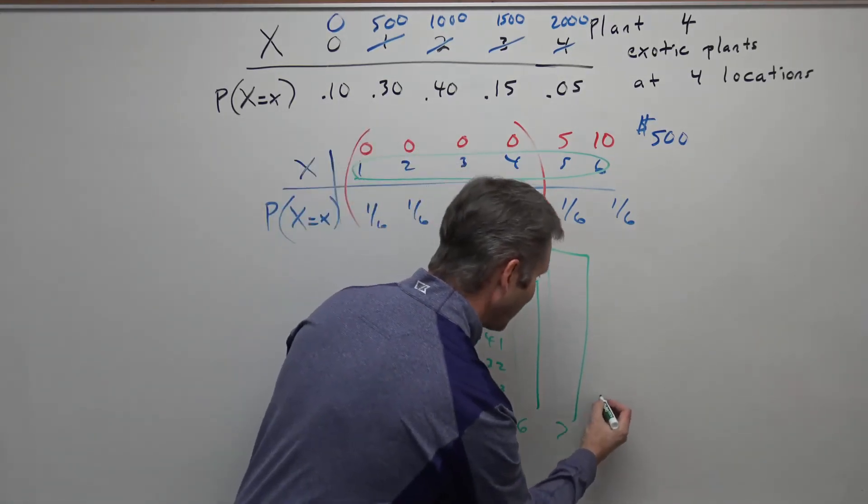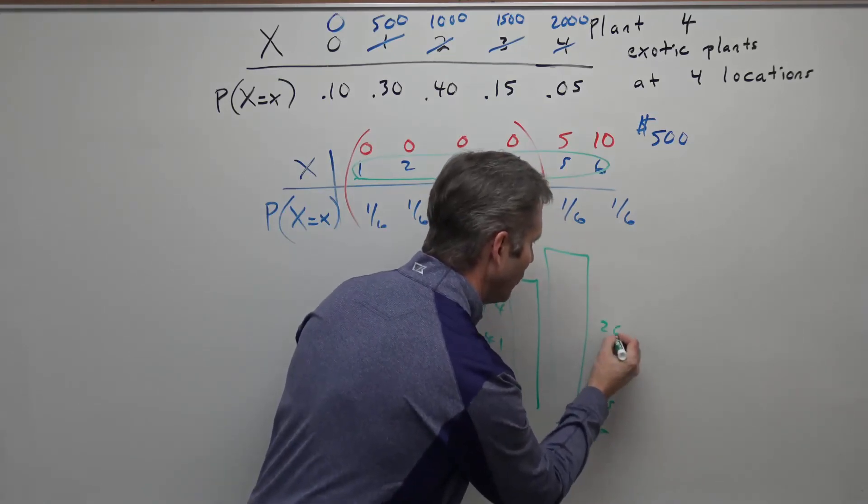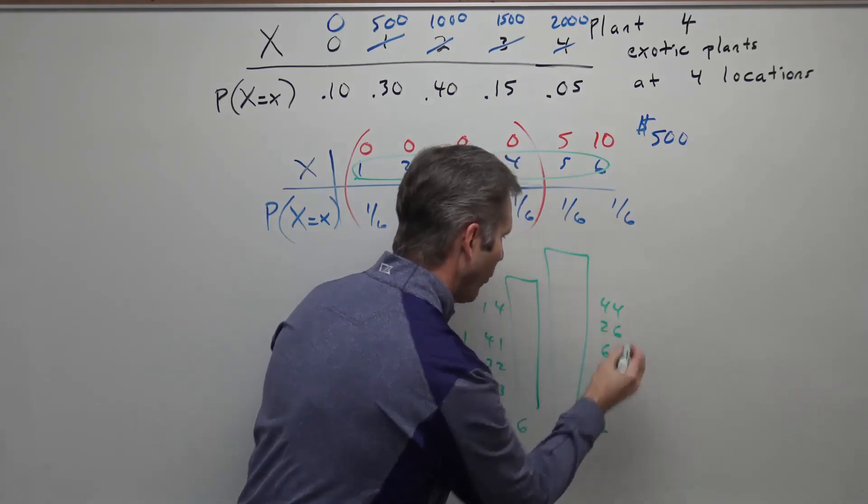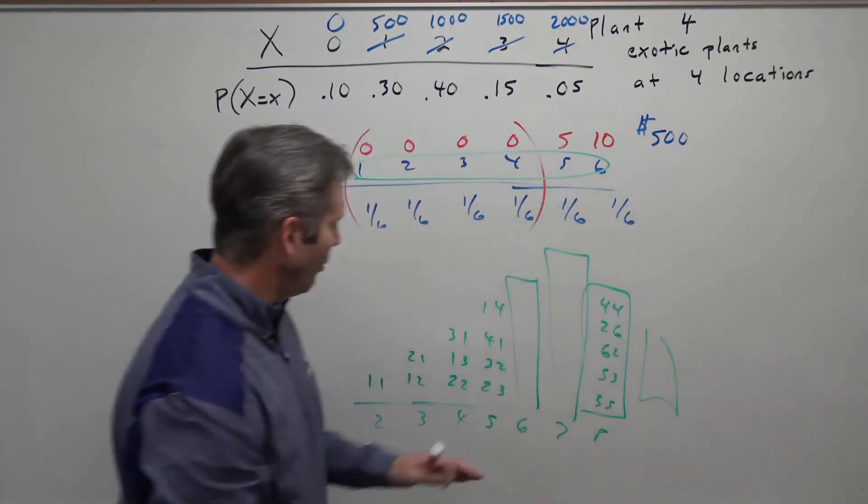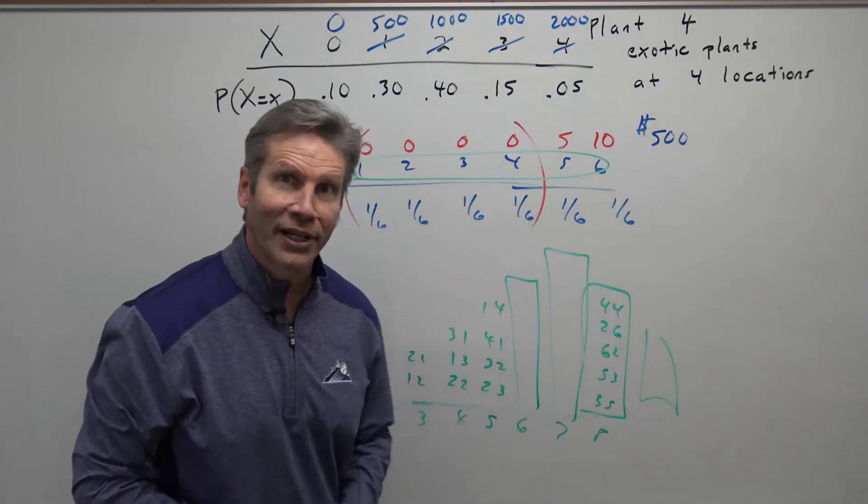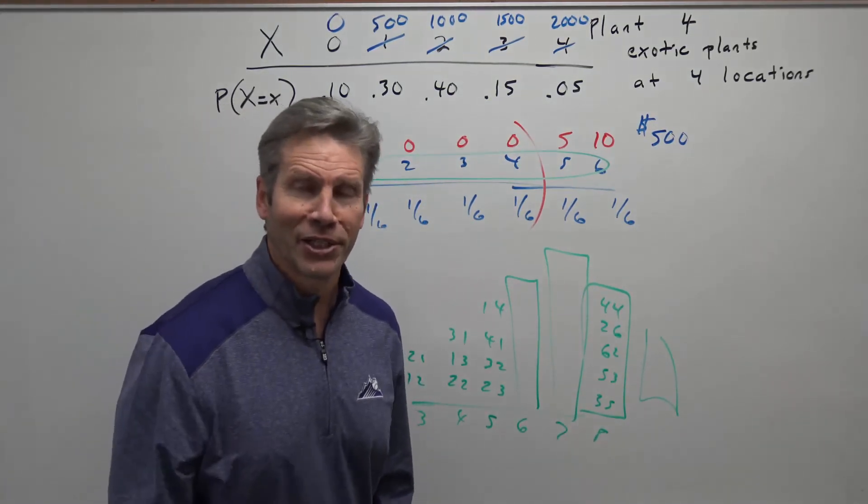To get an 8, there are 5 ways: a 3 and a 5, a 5 and a 3, a 6 and a 2, a 2 and a 6, and a 4 and a 4. So it's back down to 5 ways, then 4 ways, then 3 ways, so it's a triangular shape. You're going to need that for some of the more challenging probability problems.